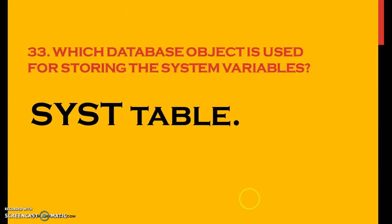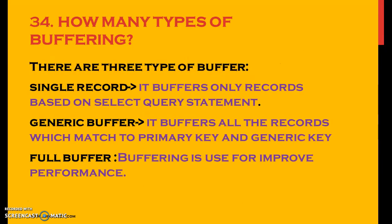So which database object is used for storing the system variables? The SYST table is used for storing all the system variables. So how many types of buffering are there? There are three types of buffering: single record buffering, generic buffering, and full buffering.